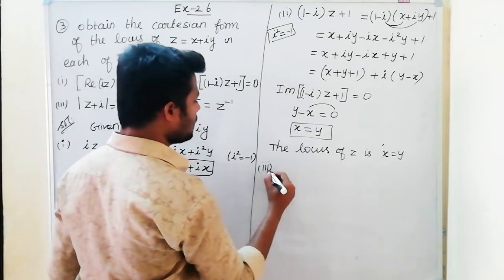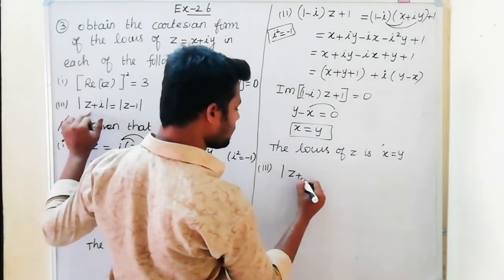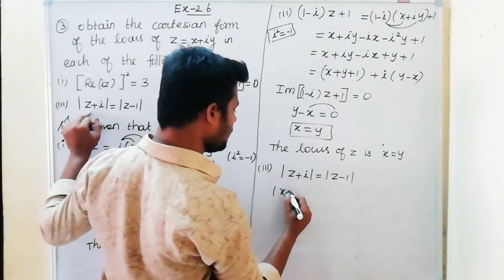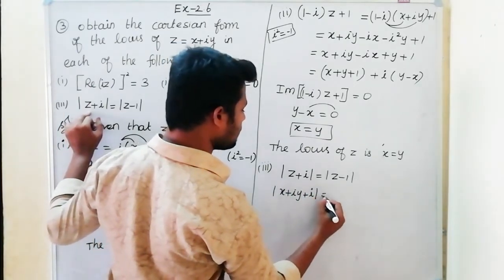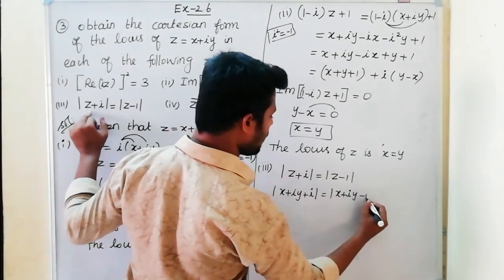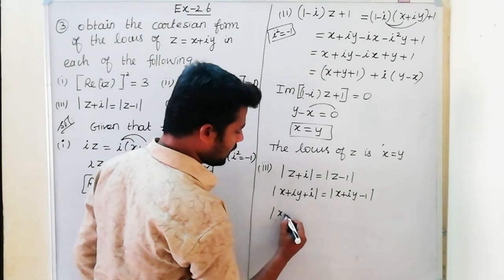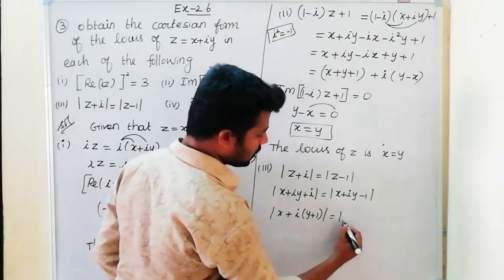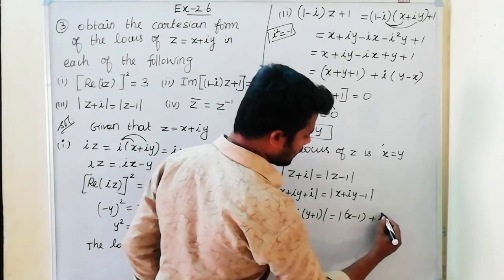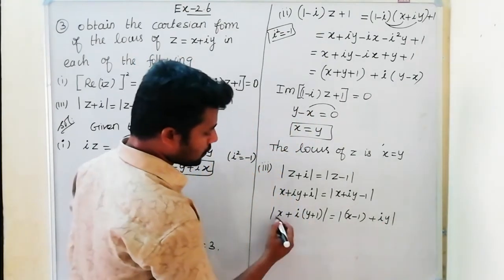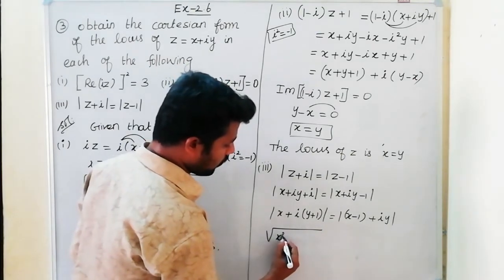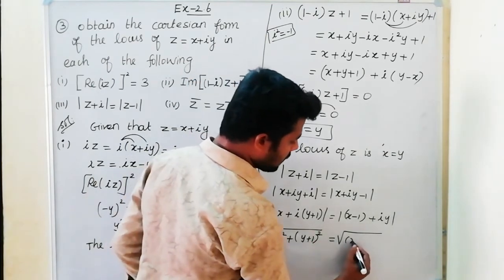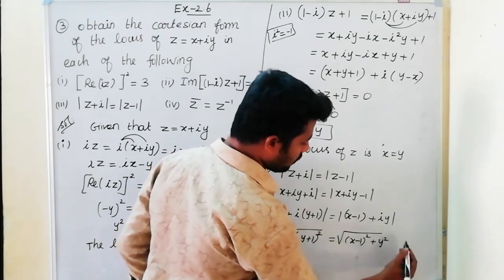Third solution: modulus of z plus i equals modulus of z minus 1. Substituting z equals x plus iy: modulus of x plus i times y plus 1 equals modulus of x minus 1 plus iy. Taking the square root of real parts squared plus imaginary parts squared on both sides: root of x squared plus y plus 1 whole square equals root of x minus 1 whole square plus y squared.